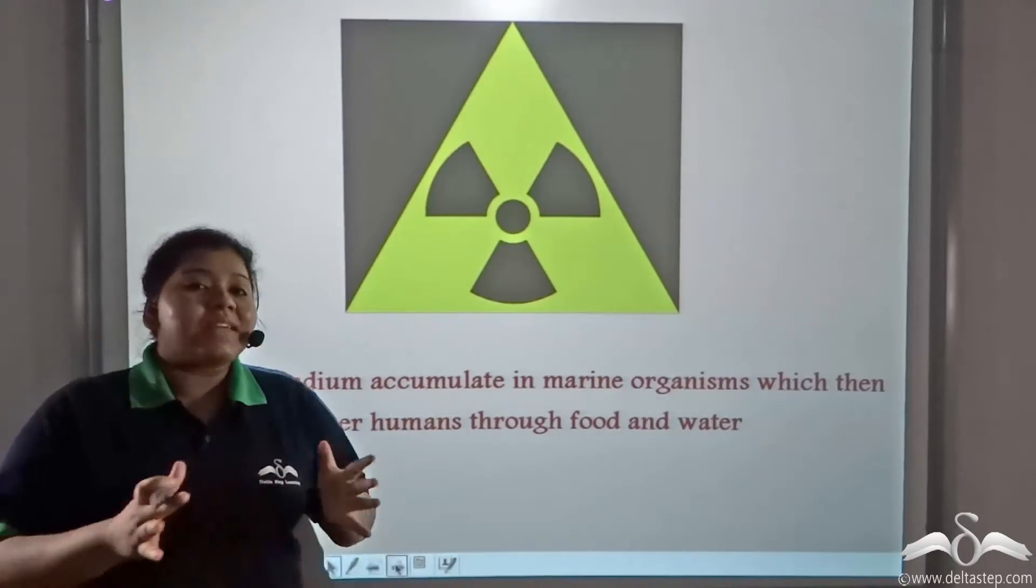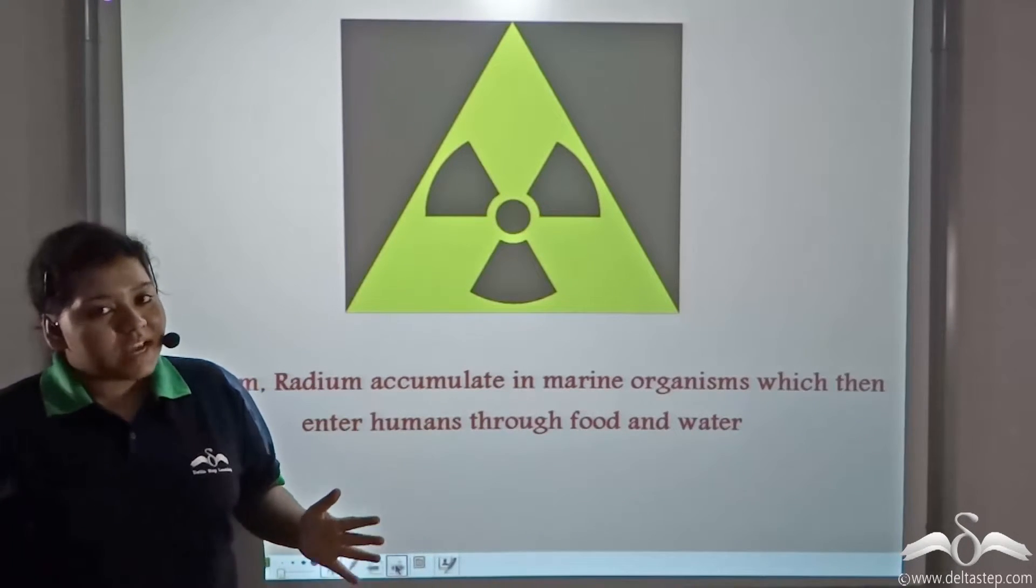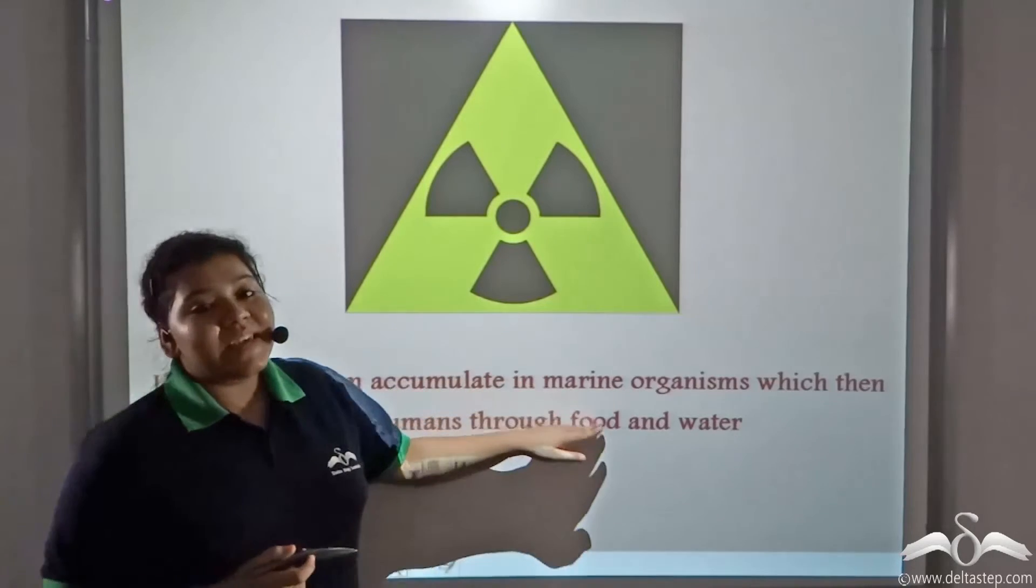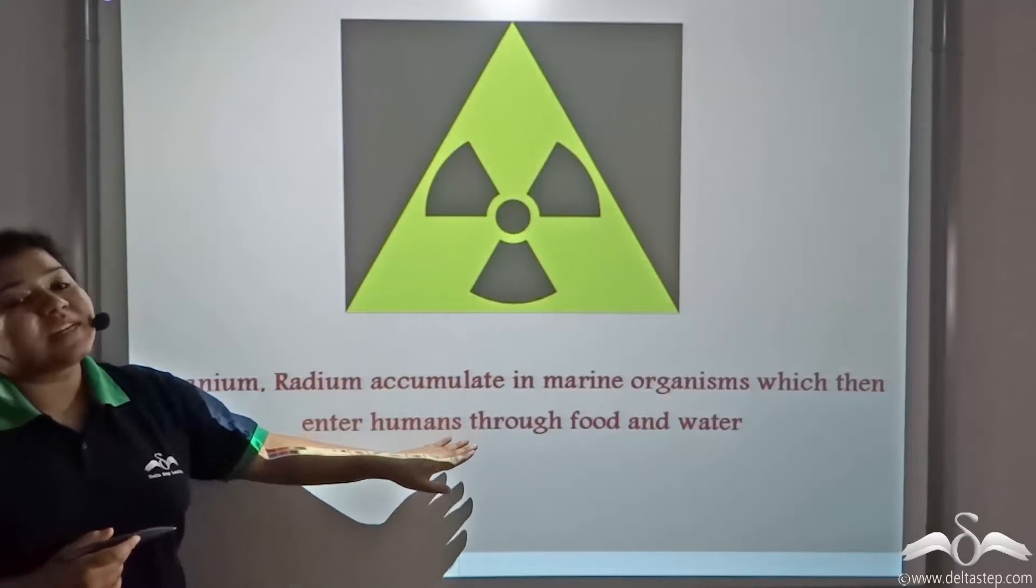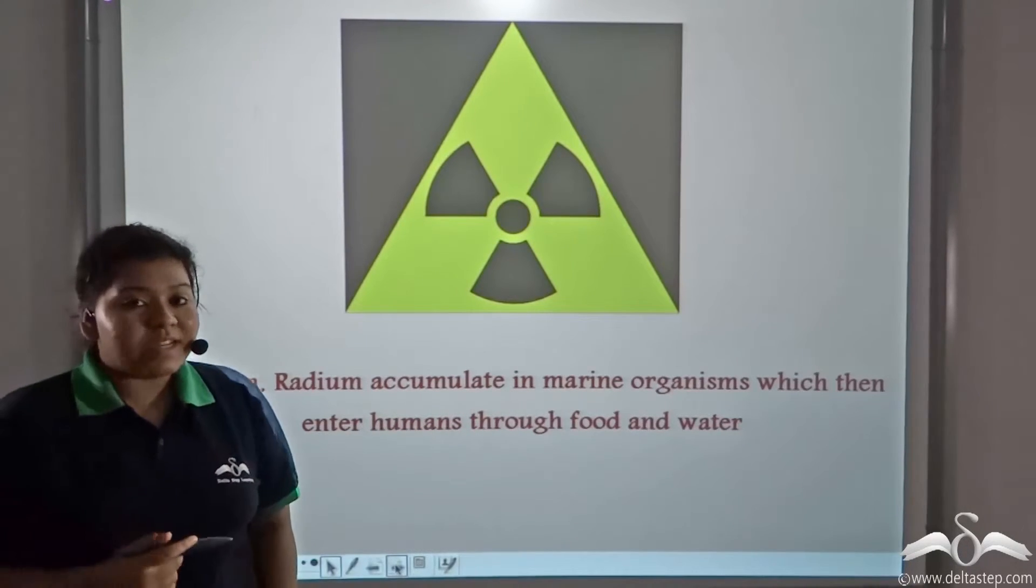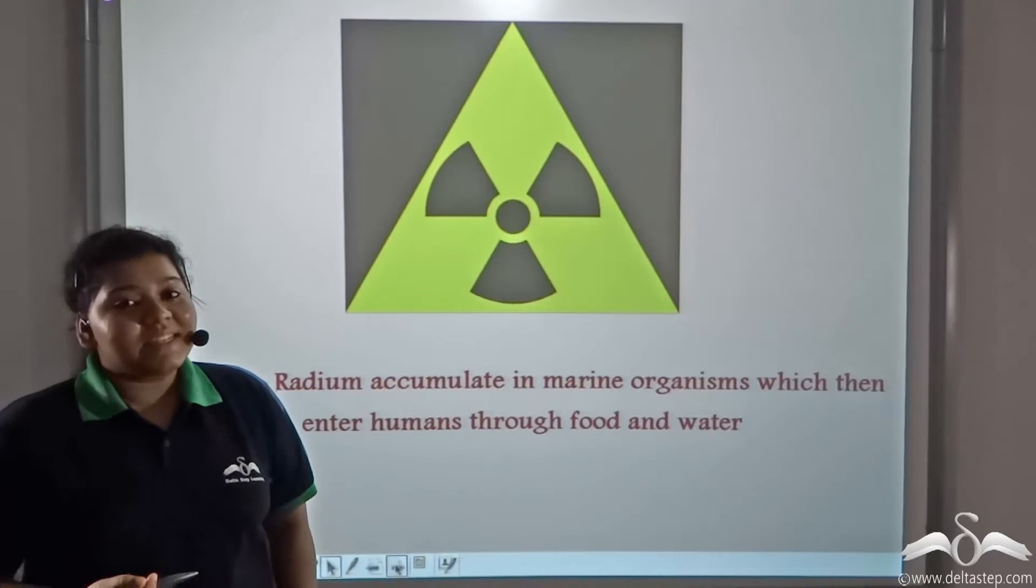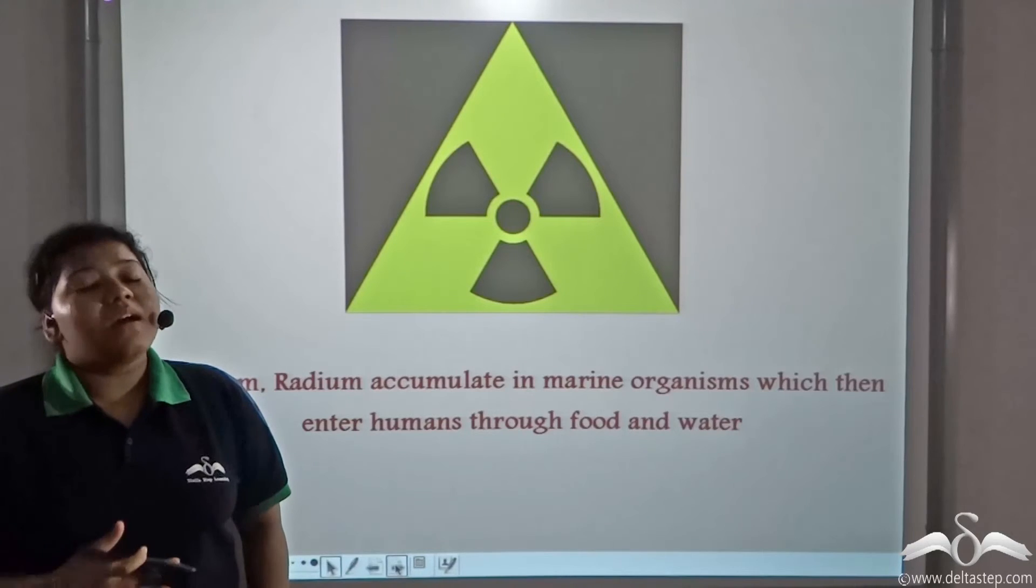These radioactive substances remain active for a very long time. They accumulate in marine organisms which then enter human bodies through food and water. In the human body, they get accumulated in the blood and vital organs causing a lot of damage.